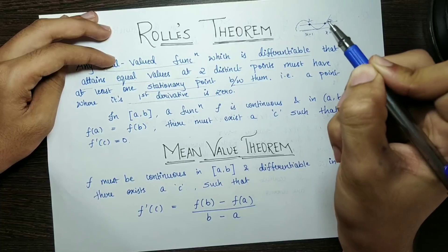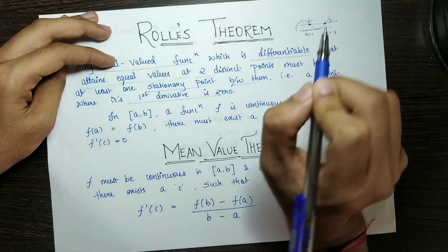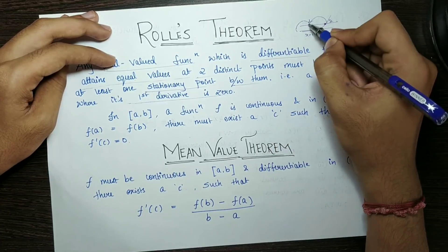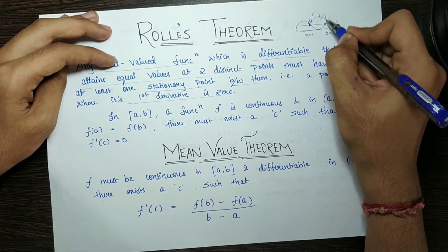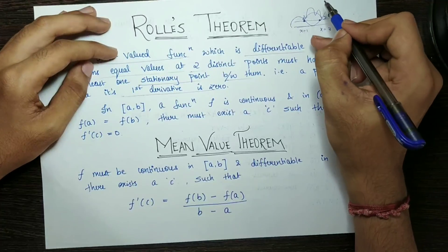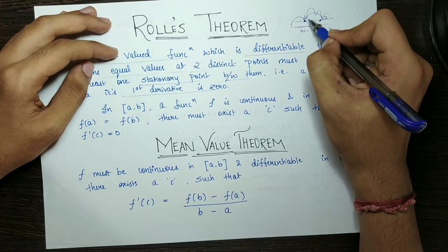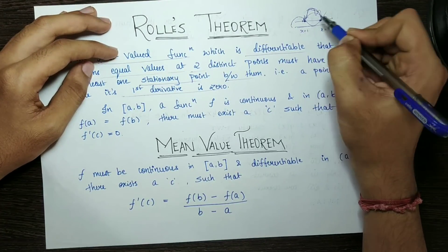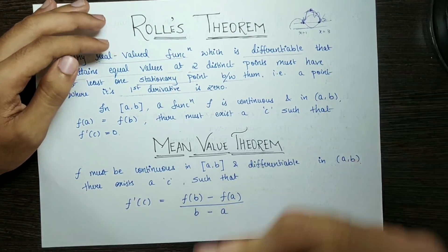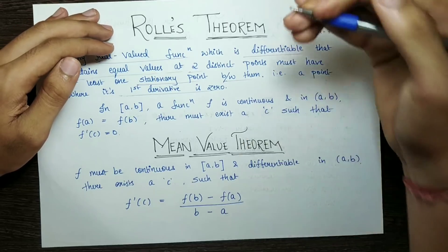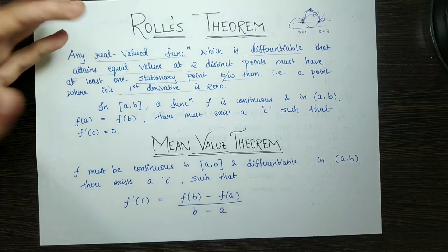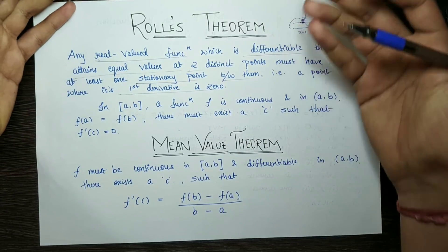The derivative is 0 means the function has either a maximum or a minimum at that point. There must be at least one stationary point — either a local minimum or a local maximum — between the two endpoints.